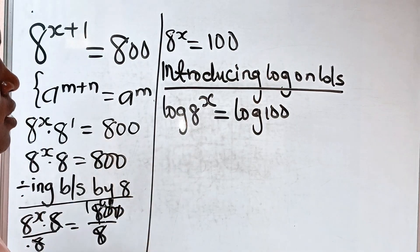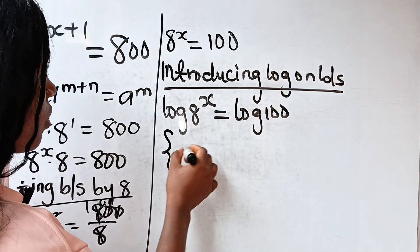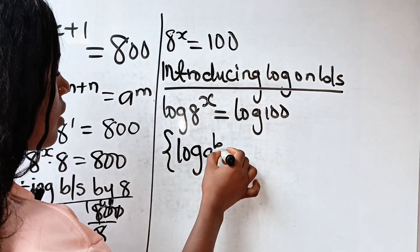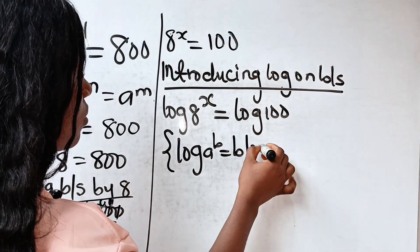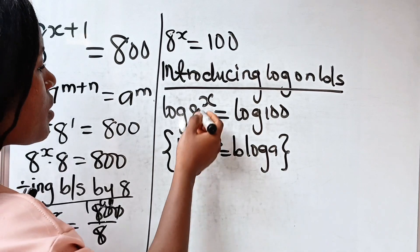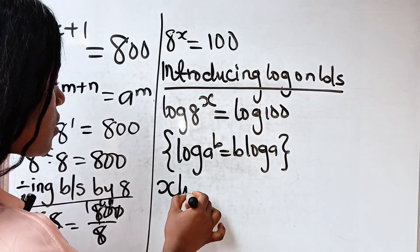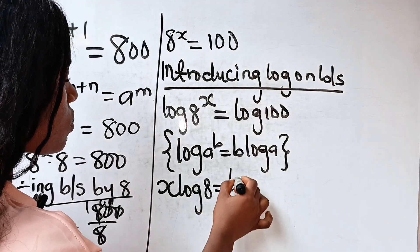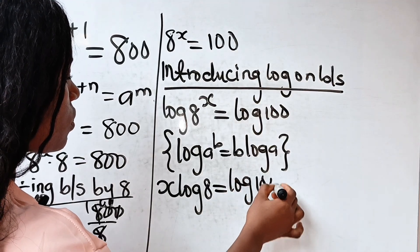Recall that log A raised to the power of B is equal to B multiplied by log A. That means we bring the exponent down to multiply log 8. So we have x log 8 is equal to log 100.